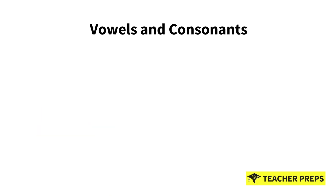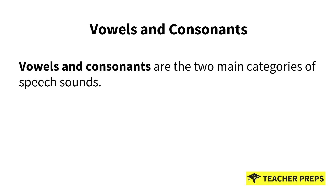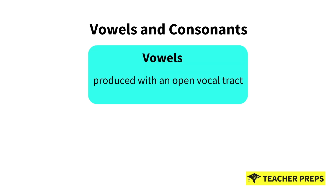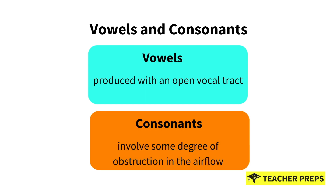Next, we have vowels and consonants. Vowels and consonants are two main categories of speech sounds. Vowels are produced with an open vocal tract and air flow is unobstructed. They form the nucleus of syllables and provide important information about word pronunciation. Consonants, on the other hand, involve some degree of obstruction in the air flow as they contribute to the unique features of words.